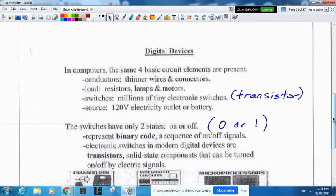In digital devices like computers and cell phones, you have the same four basic parts: conductors with thinner wires that are usually shorter, loads that are resistors, lamps, and motors.